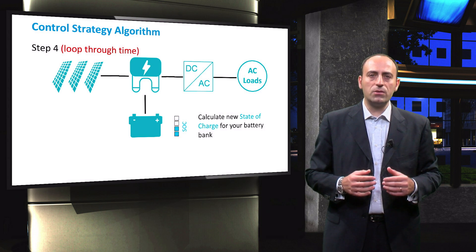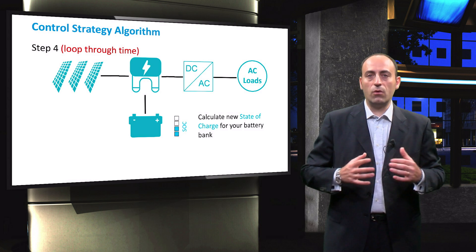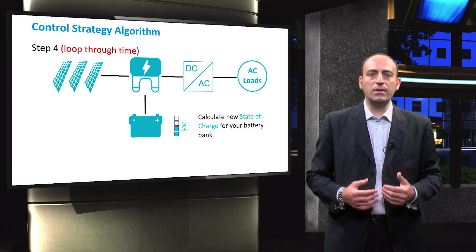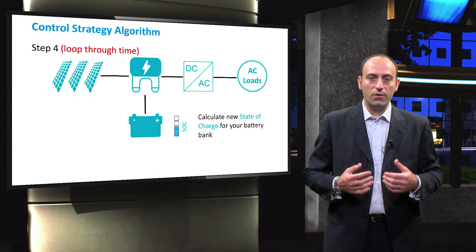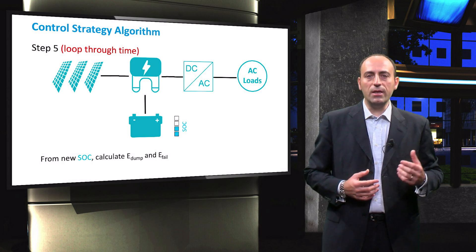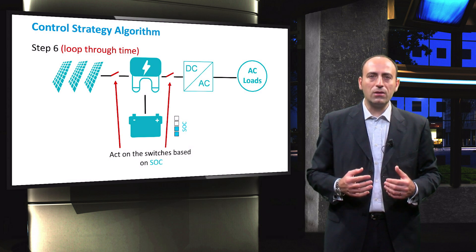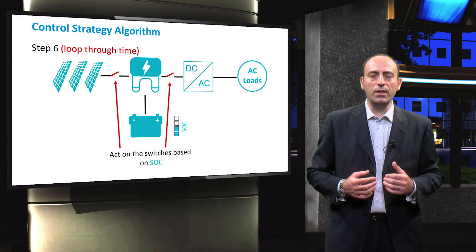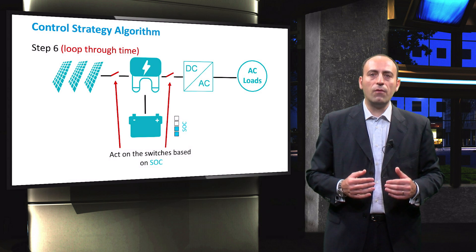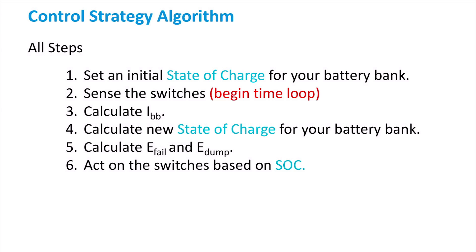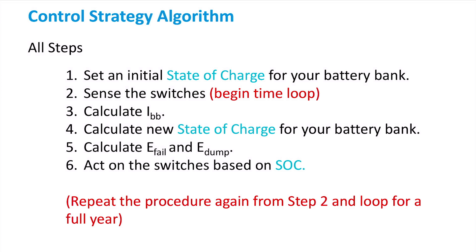In the fourth step, based on the IBB value, whether it is positive or negative, calculate the instantaneous state of charge of the battery bank. Then, from the new SOC, calculate E-fail or E-dump, if applicable. Finally, in the last step, act on the charge controller switches based on the calculated new SOC and repeat the loop for the new time step. In summary, steps 2 through 6 are looped throughout the entire year for every time step to determine the instantaneous values of the different parameters, such as state of charge, battery bank current, etc.